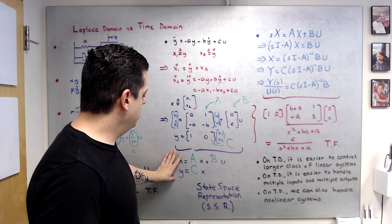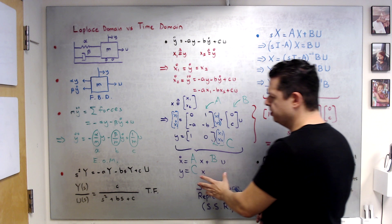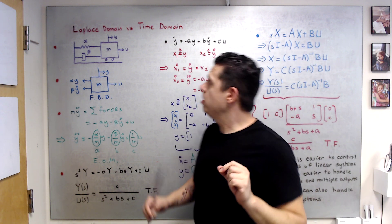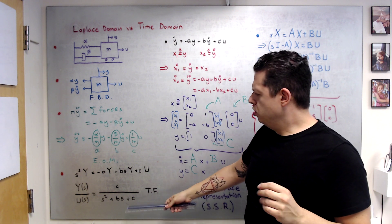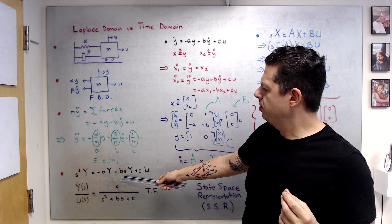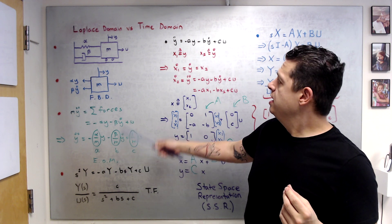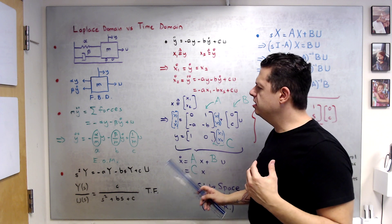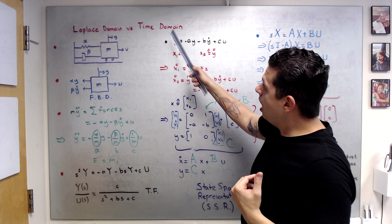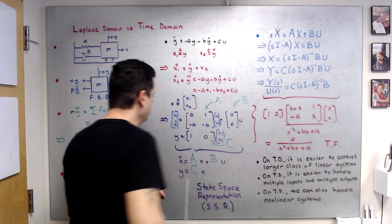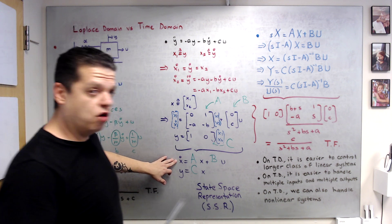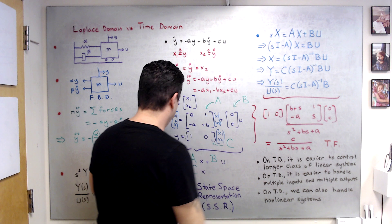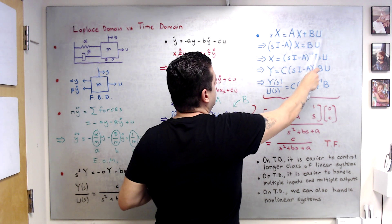In the final part of this video I want to show that this state space representation is equivalent to the transfer function, because they represent the same system. To go from Laplace domain to time domain: start from the transfer function, obtain the equations of motion, define state variables, and you have the state space formulation. To go from time domain to Laplace domain: take x-dot = Ax + Bu, apply the Laplace transform to get sX = AX + Bu.